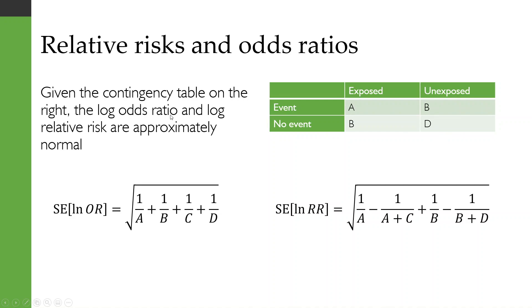The log odds ratio and the log relative risk are approximately normal. So that means you can model the odds ratio or the relative risk with a lognormal distribution. And the formulas for these are quite nice in terms of what the standard error or the sigma parameter is going to be just in terms of that contingency table.